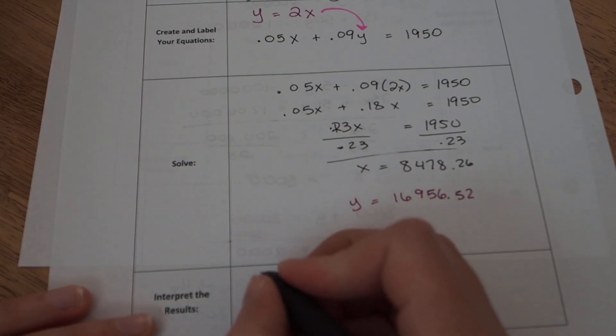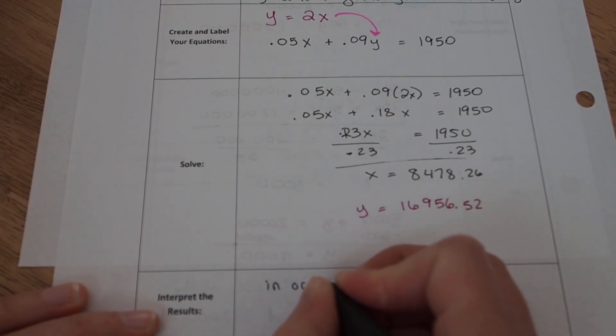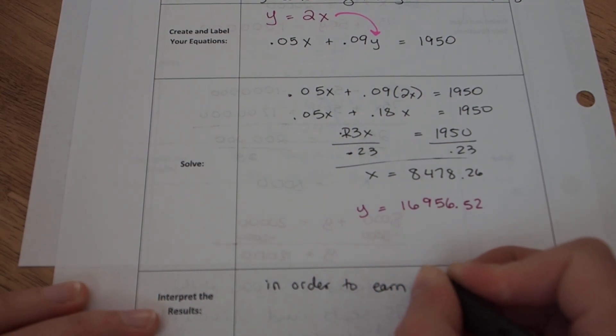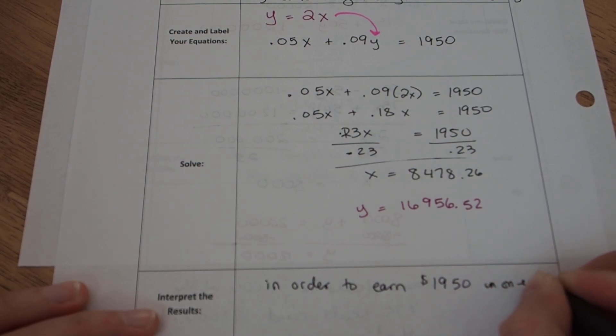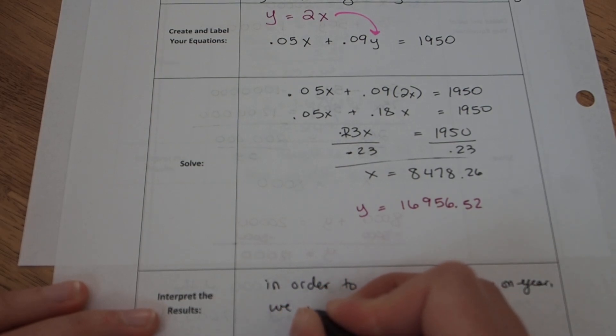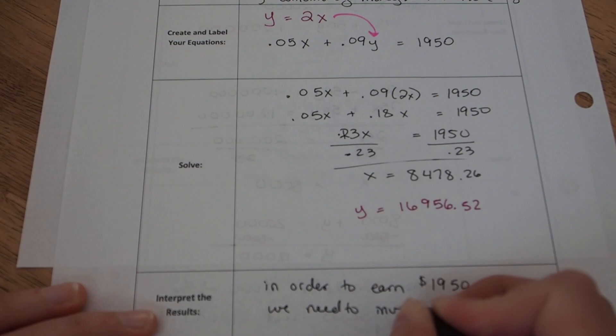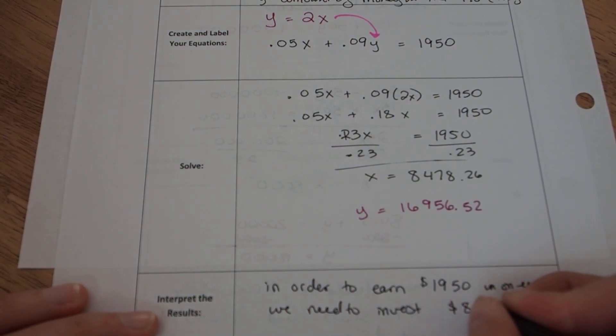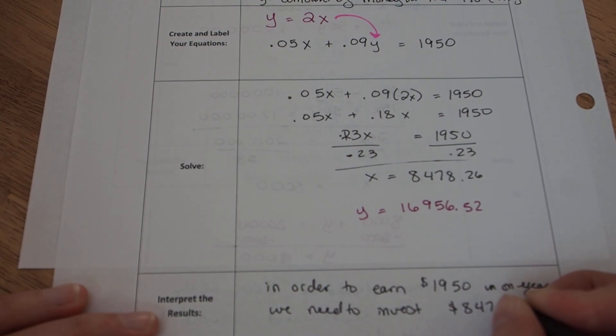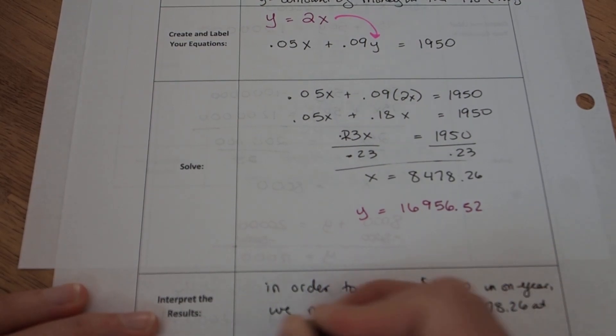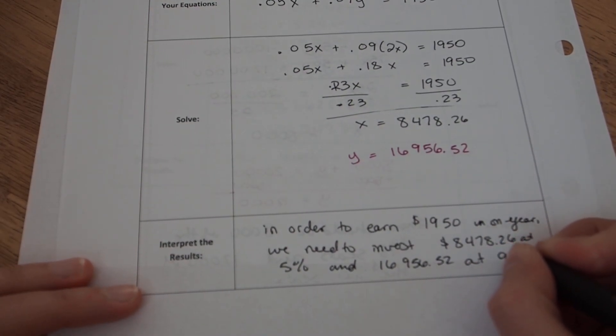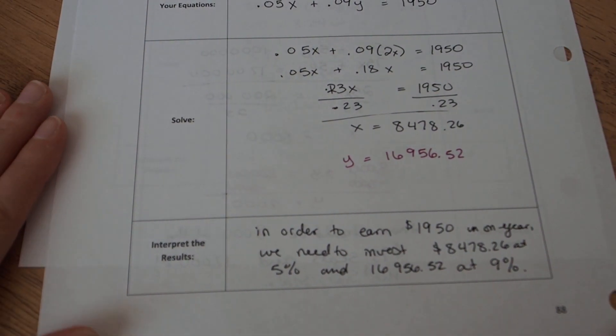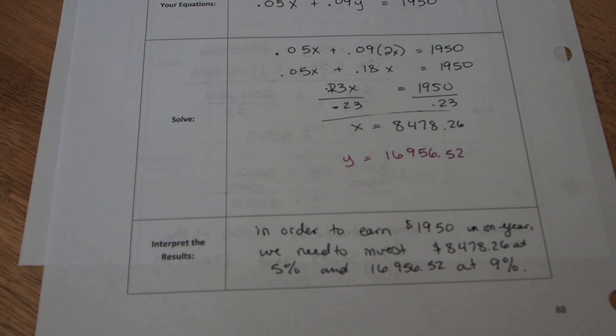So now we want to find the amount in the y account. But I know that y is equal to 2 times x. So y equals 2 times that amount, which is $16,956.52. So in conclusion, in order to earn the $1,950 in one year, we need to invest $8,478.26 at 5% and $16,956.52 at 9%.